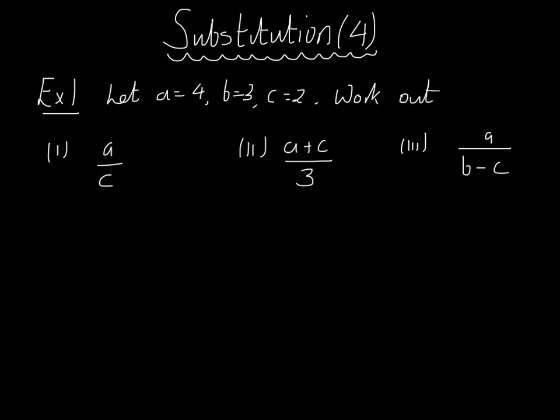If we have that A is equal to 4, B is 3 and C is 2, we're asked to work out the following things. Part 1: A over C, that means A divided by C. So when we substitute in, A is 4 and we're dividing by C which is 2, and 4 divided by 2 is obviously 2. That's our answer.